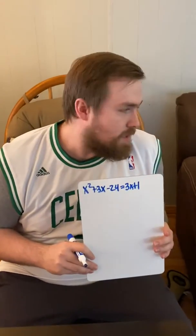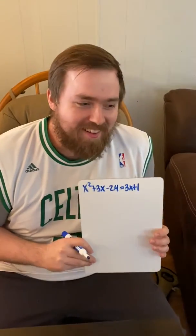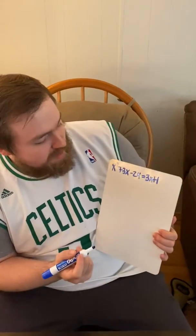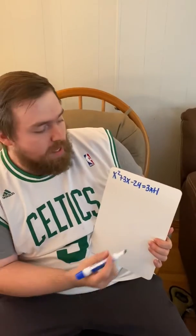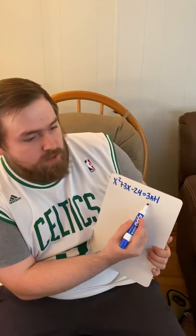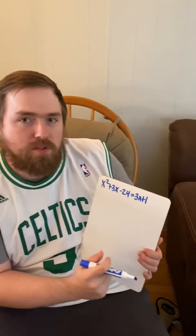First thing that you want to do when you have a problem that looks like this is go ahead and try to set it equal to zero. The way you're going to do that is you're going to subtract 3x from both sides and subtract 1 from both sides.